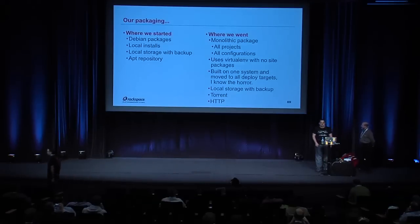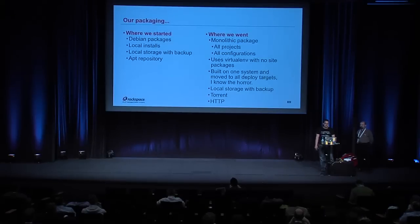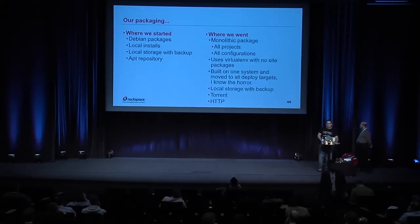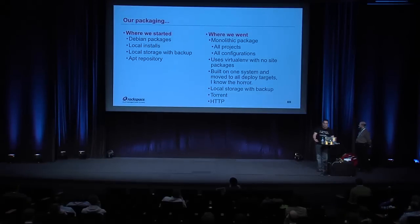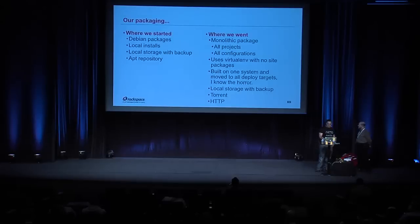We then moved to a more monolithic package containing all of the projects — Nova, Glance, Quantum, and Melange — along with puppet-based configurations. It uses virtual environments with no site packages at all, so it's completely self-contained. They were built on a single Jenkins slave and copied from system to system. We also moved to using torrenting to deploy the package to all our systems, along with HTTP for downloads.